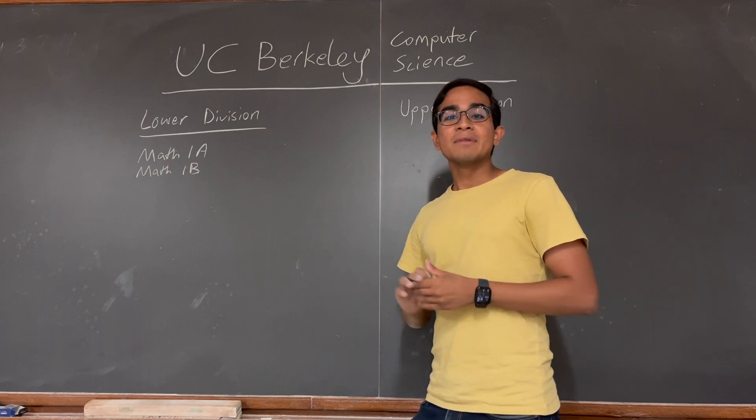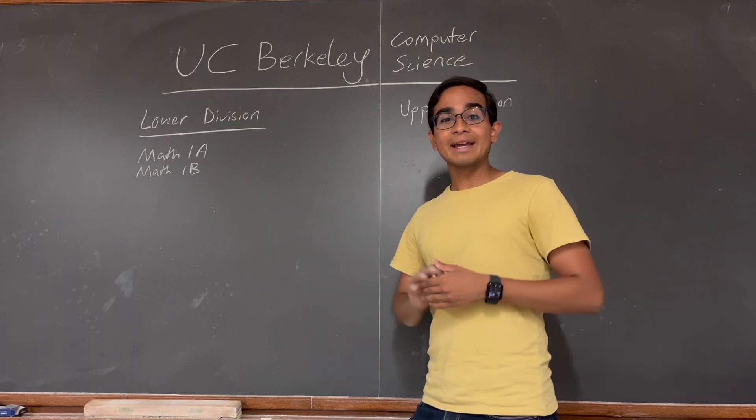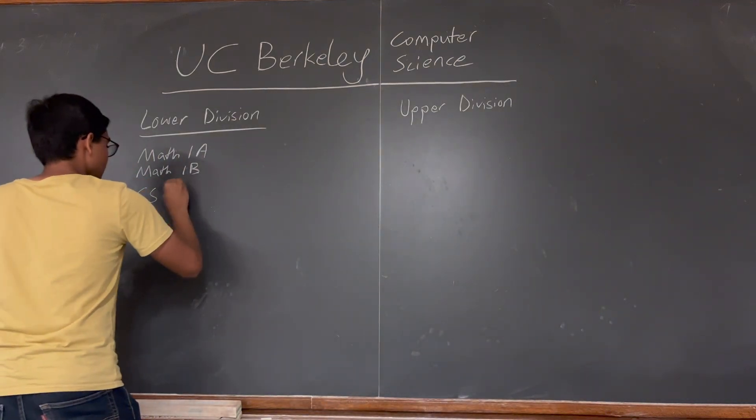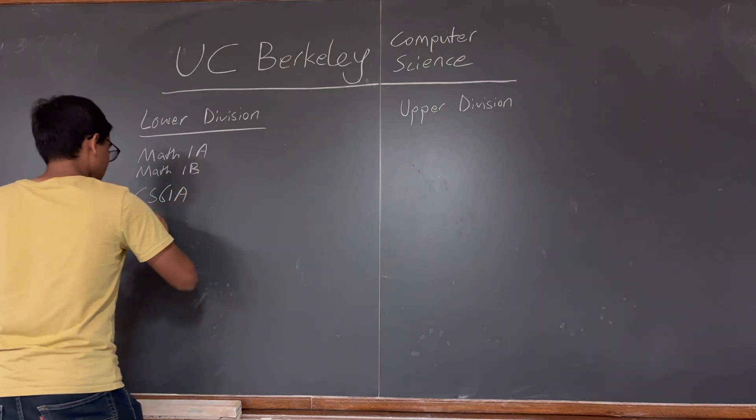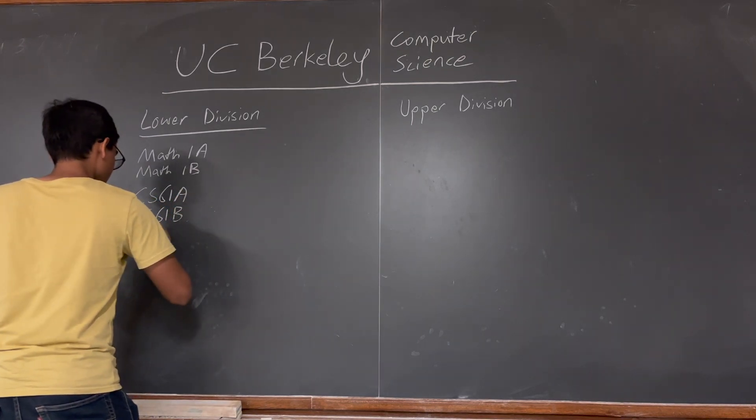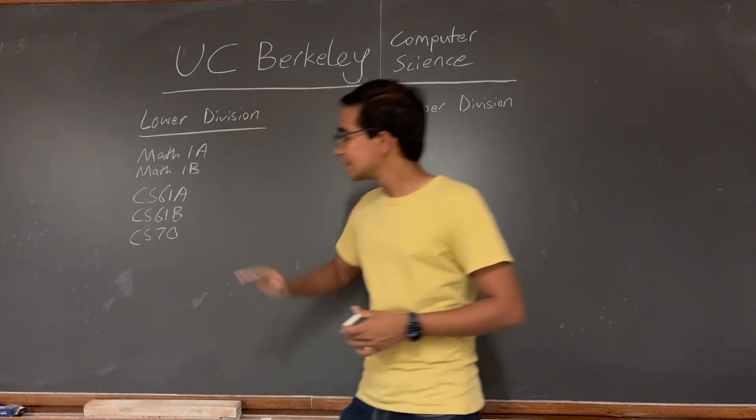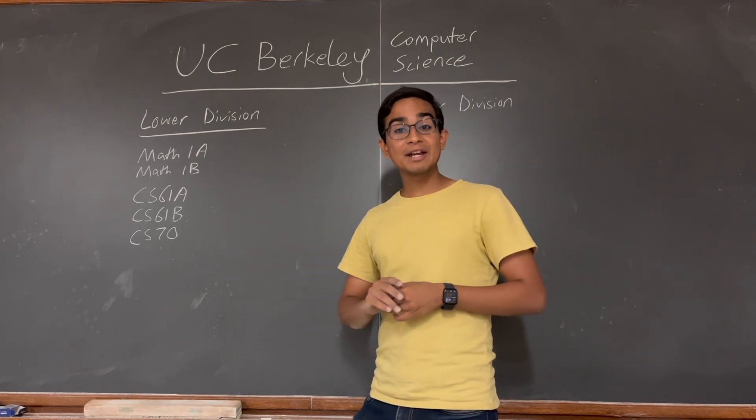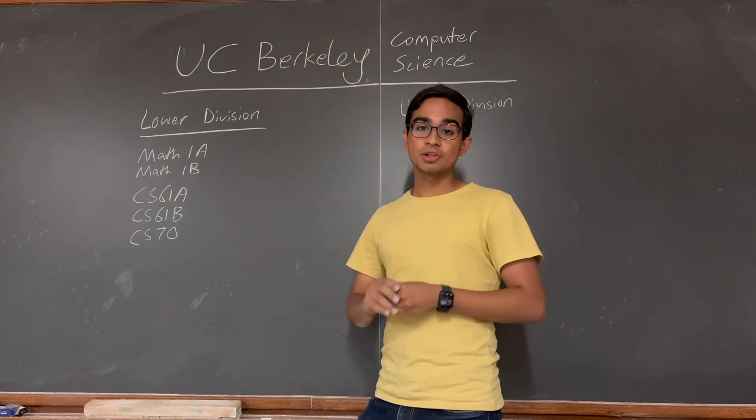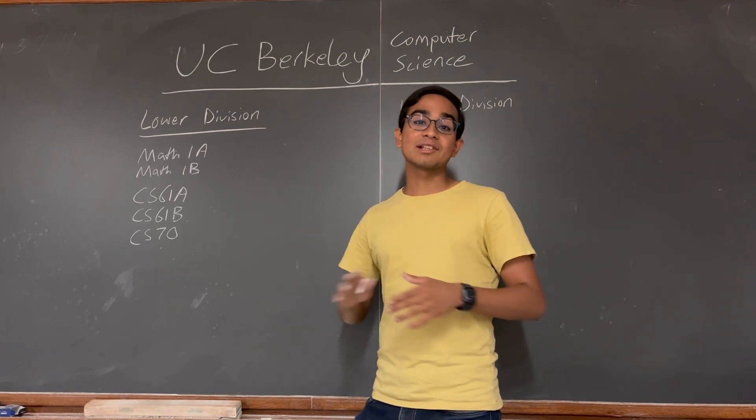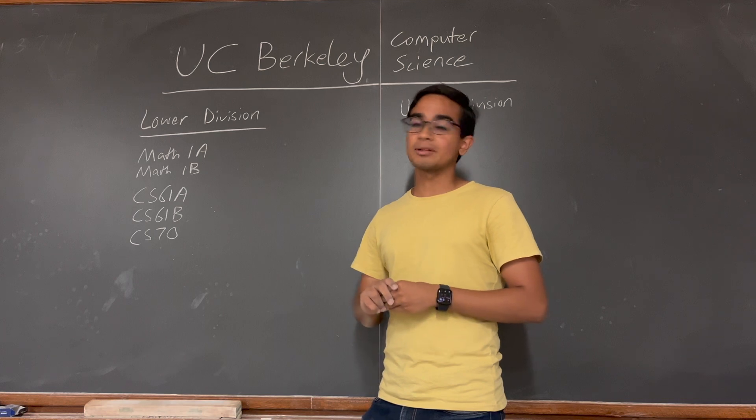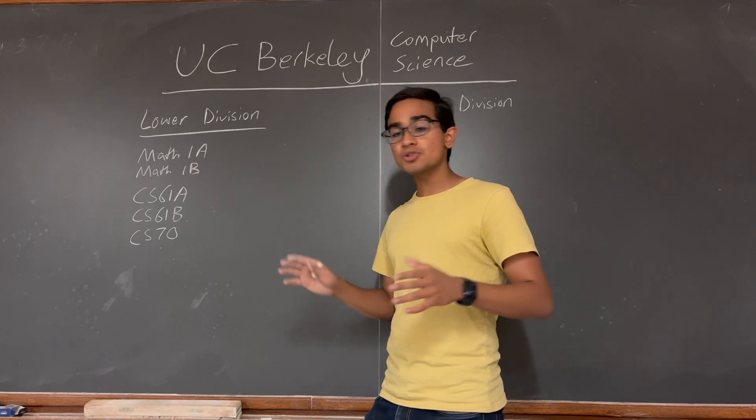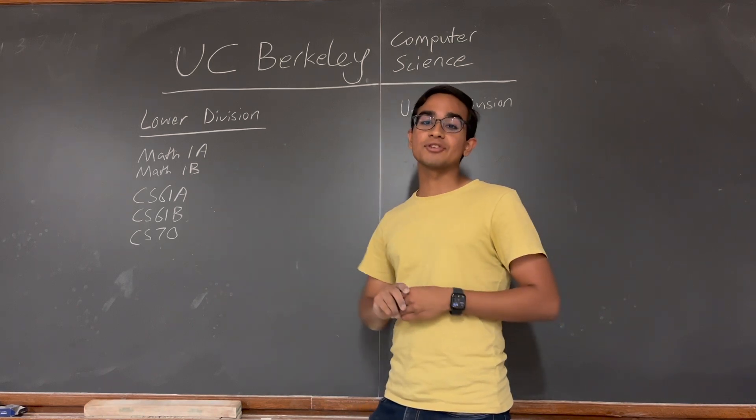The next set of classes we'll look at are probably the classes you've heard of before: 61A, 61B, and 70. CS61A is an advanced introduction to computer science. It is taught in Python and teaches functional programming. CS61B is Data Structures, a very important class in the CS curriculum. And CS70 is discrete mathematics and probability theory. Most students find CS70 the most challenging out of these three classes.